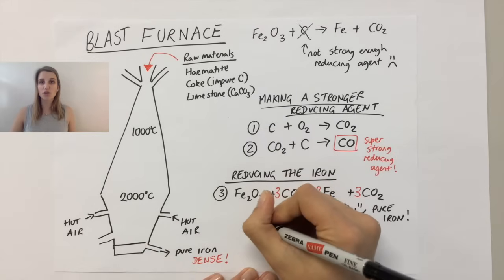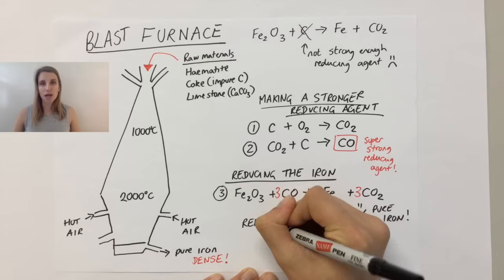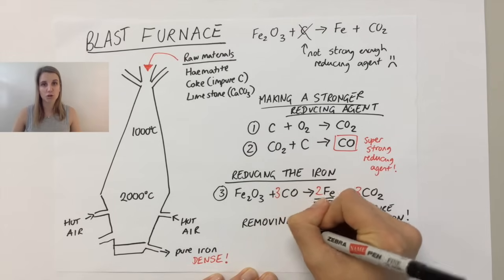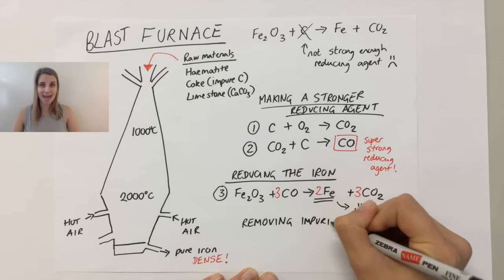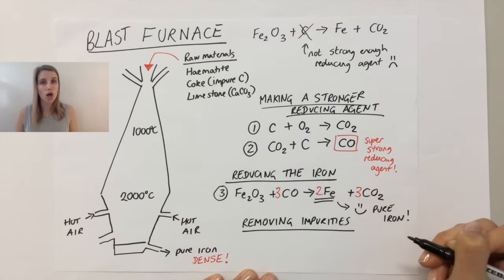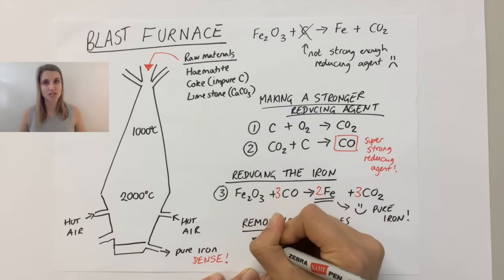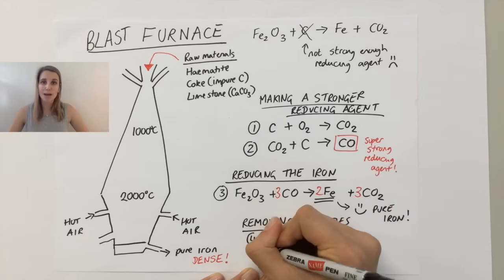Now we haven't used the limestone at all, which we put into the top of the blast furnace. Now the point in the limestone is to remove impurities. And the biggest impurity is sand. So because we put hematite in, hematite is rock that had some iron in it, but rock also is made of a lot of sand. So we need to get rid of that in the best way that we can.